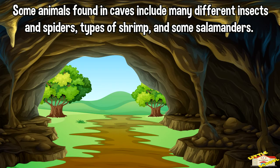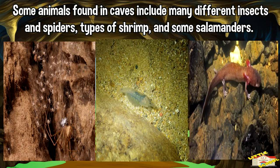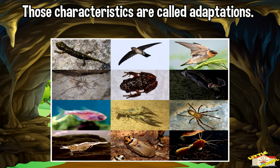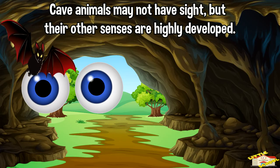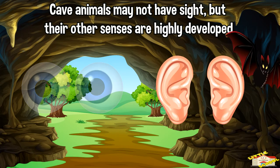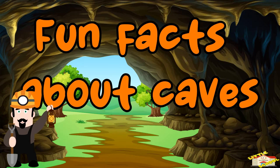Caves are the home of many different animals. Some animals found in caves include many different insects and spiders, types of shrimp, and some salamanders. Animals that live in caves have special characteristics to help them survive. Those characteristics are called adaptations. Cave animals may not have sight, but their other senses are highly developed. For example, insects that live in caves usually have very long antennae to feel their way around.